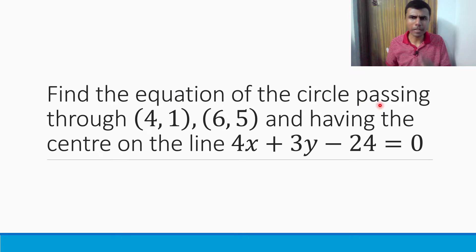Here we need to find the equation of a circle passing through (4,1) and (6,5), and its center lies on 4x + 3y - 24 = 0. Stay with me until the end, I'm gonna make it easy for you.